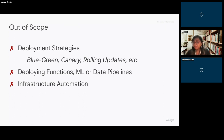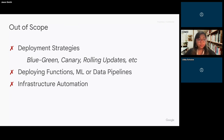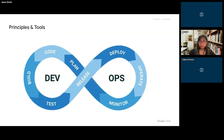Some things that are out of scope for this conversation: we're not going to talk about deployment strategies like blue-green, canary, or rolling updates; deploying functions or ML data pipelines; or infrastructure automation such as infrastructure-as-code. DevOps is a large scope and can be integrated into other forms of computing beyond deploying applications. We may cover those in a future webinar series or blog series.